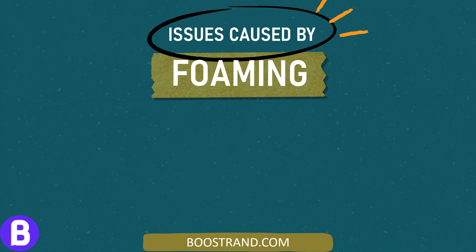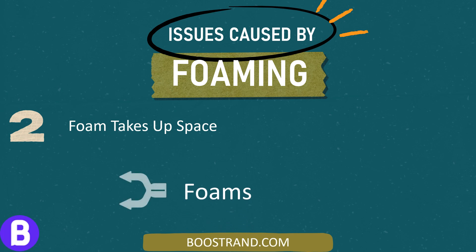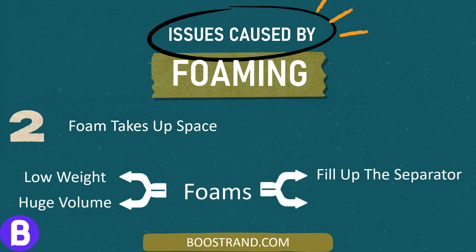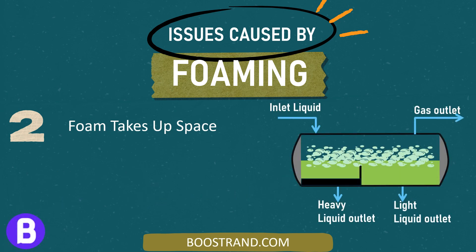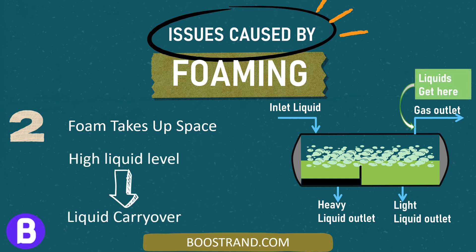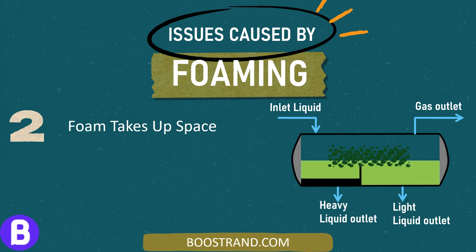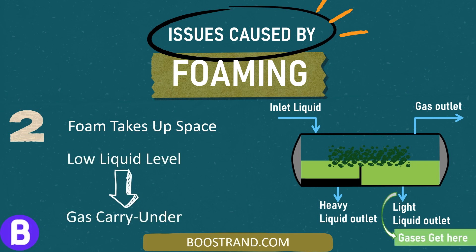Secondly, foam takes up space. Foam doesn't weigh much but takes up a huge volume. This means it can fill up the separator, leaving less space for liquid to settle down. If the liquid level in the vessel was high, this shall cause liquid carryover in the outlet gas. If the liquid level in the vessel was low, gas carry-under will occur, which means that gas shall escape from the liquid outlet.